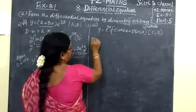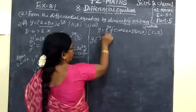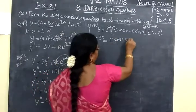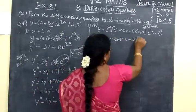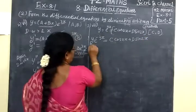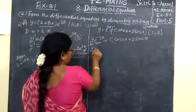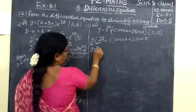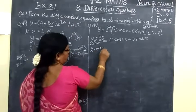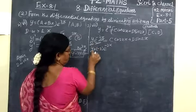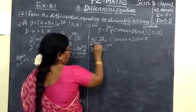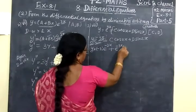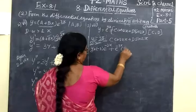For the next question, we have to eliminate C and D. The equation is y = e^(-3x) times (C·cos2x + D·sin2x). Now we differentiate using the UV method — first function into differentiation of second function, then minus 3 over 1, then e^(-3x) first function into differentiation of second function, plus second function into differentiation of first function.